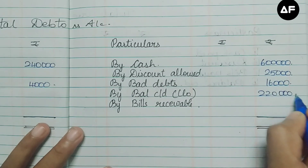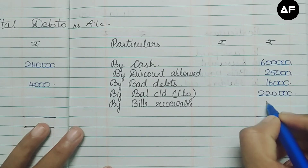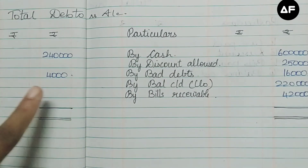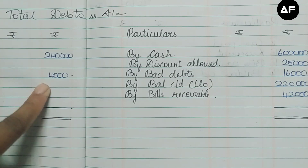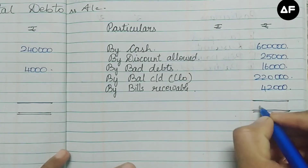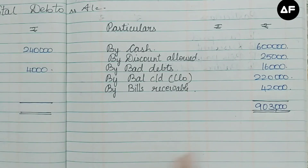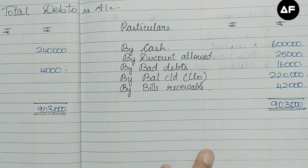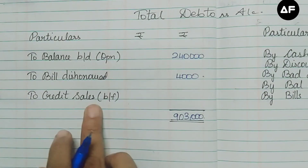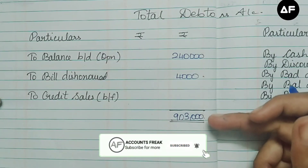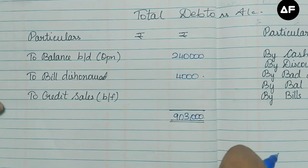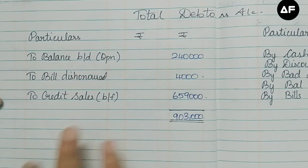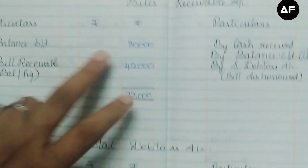The closing balance is 2,20,000, and the bills receivable balancing figure transferred from the bills receivable account is 42,000. Totaling both sides: the debit side gives 2,44,000, and the credit side gives 9,03,000, which is the greatest total — written as the grand total on both sides. Subtracting 2,44,000 from 9,03,000 gives credit sales of rupees 6,59,000. The bills receivable account and total debtors account are now complete.